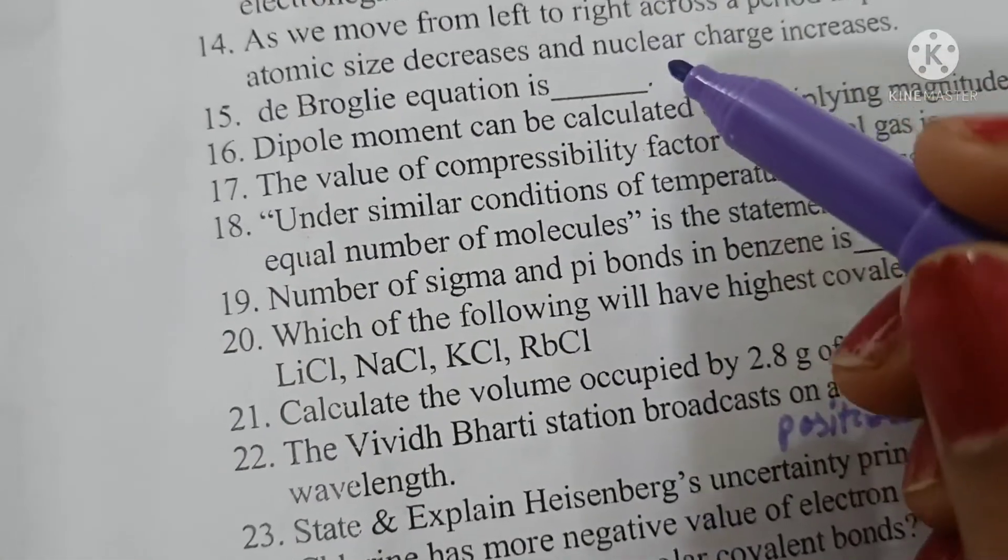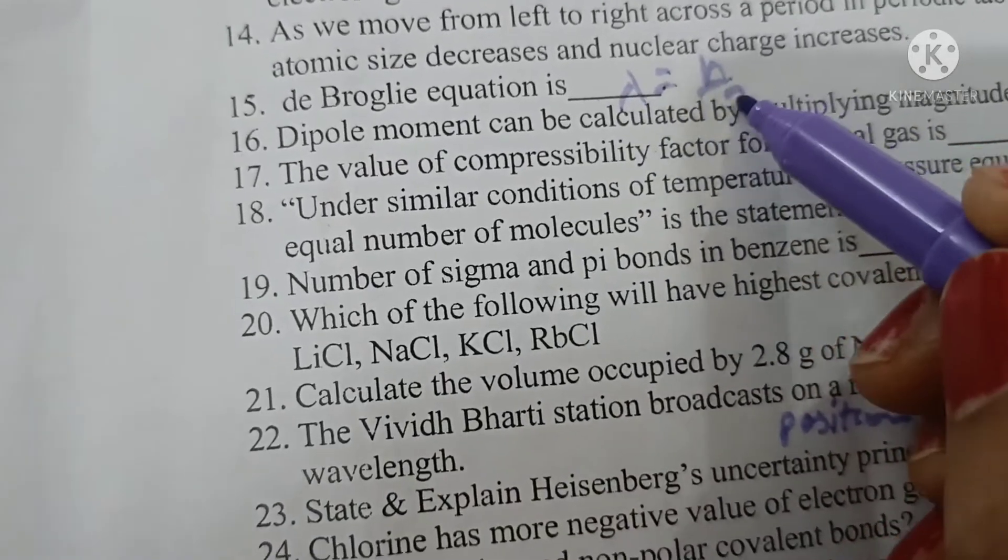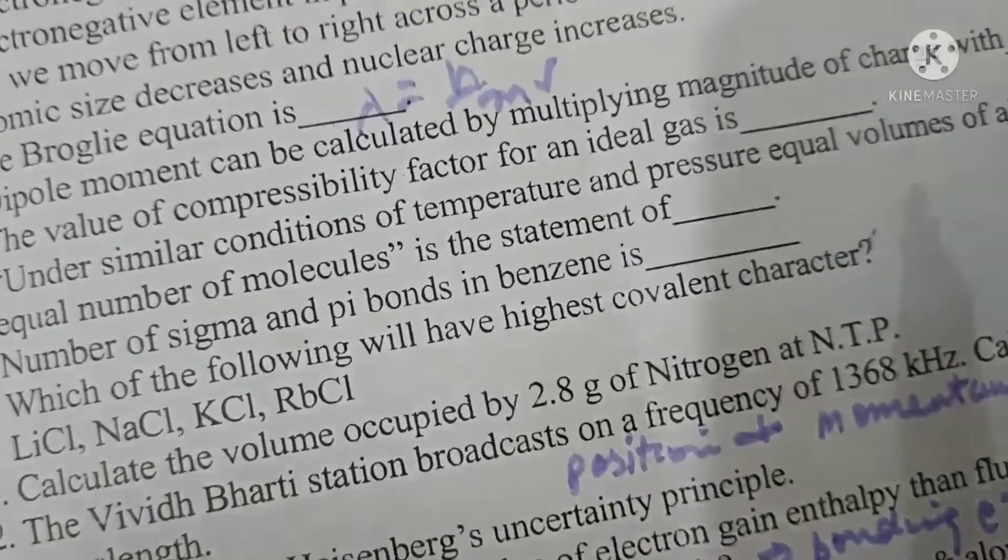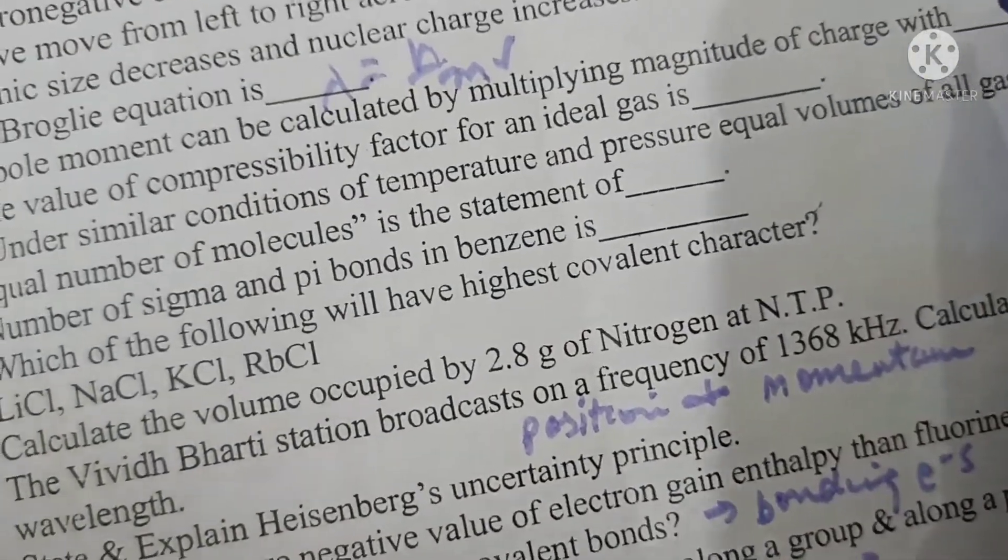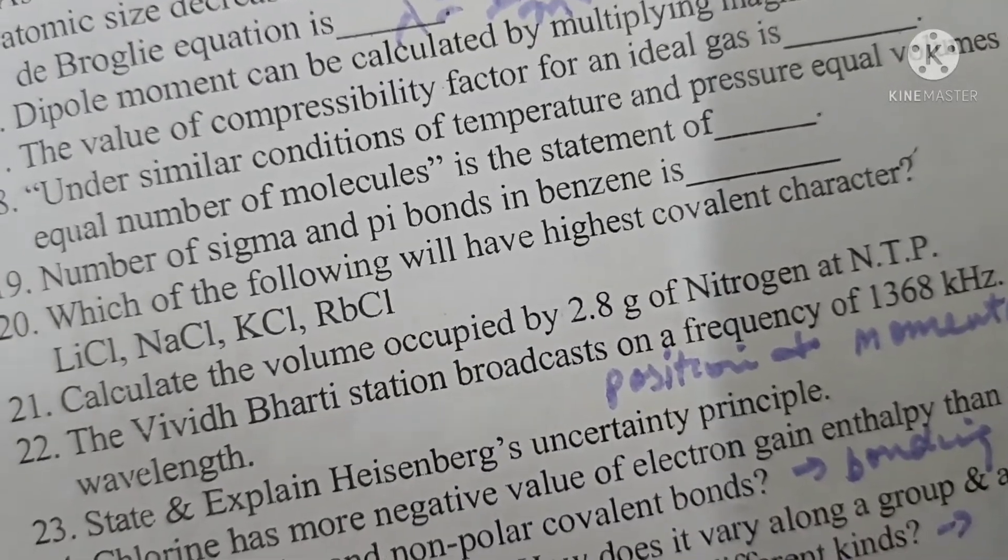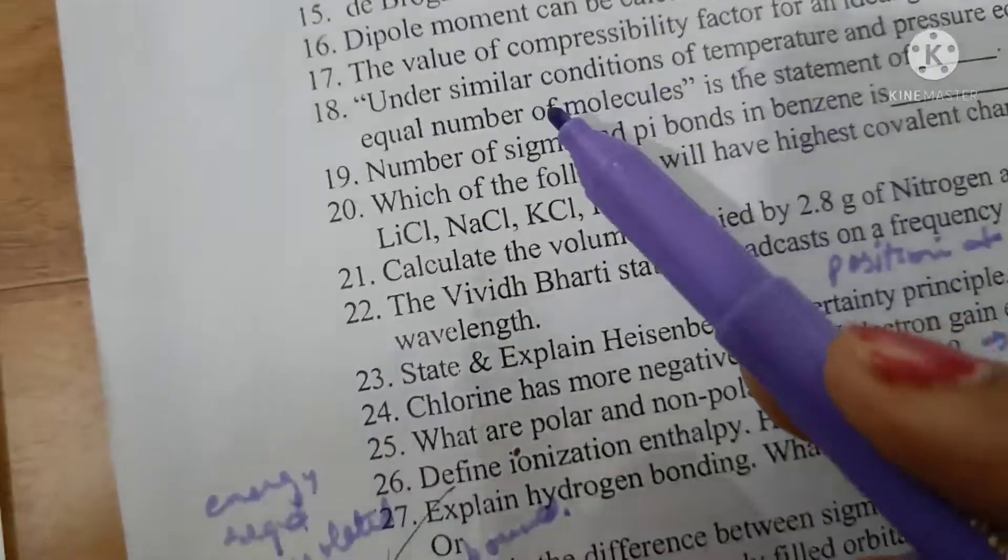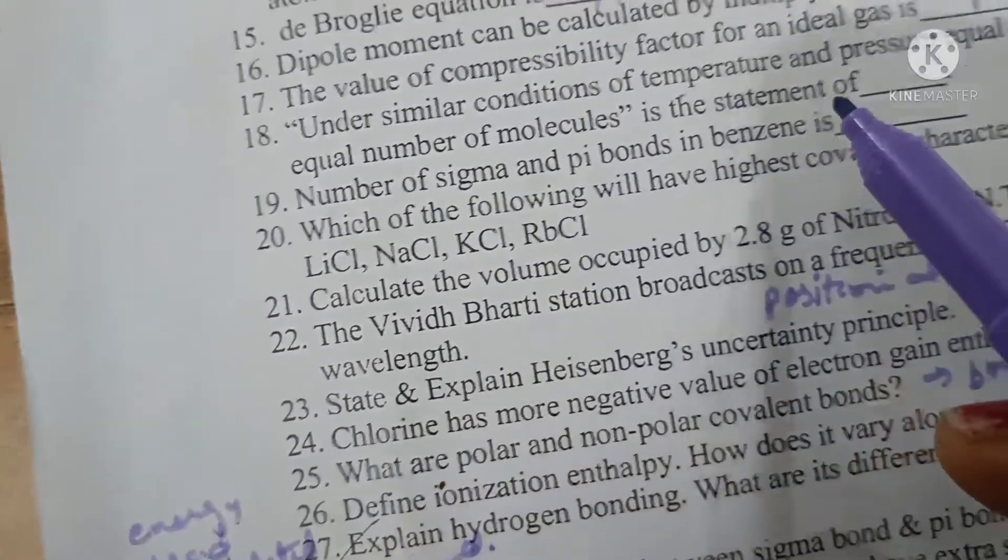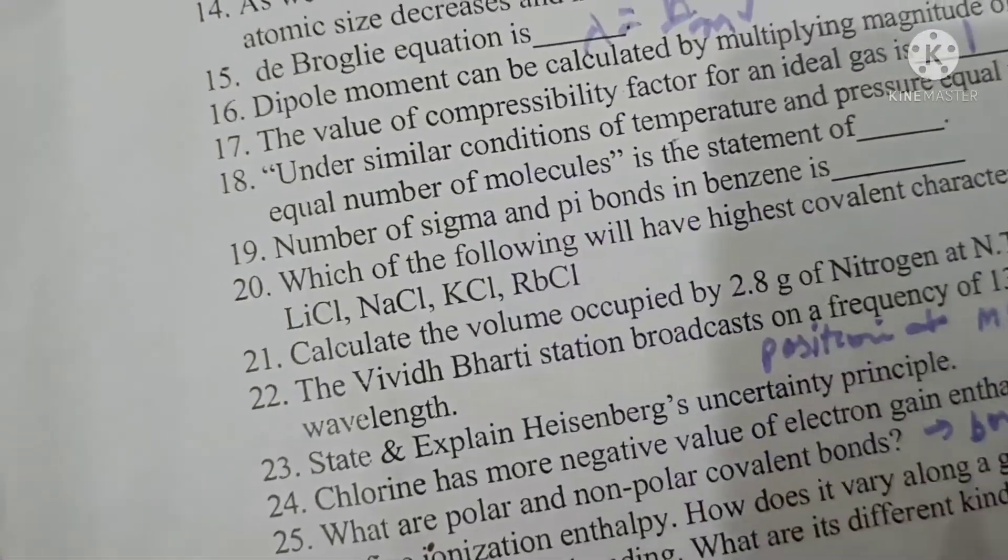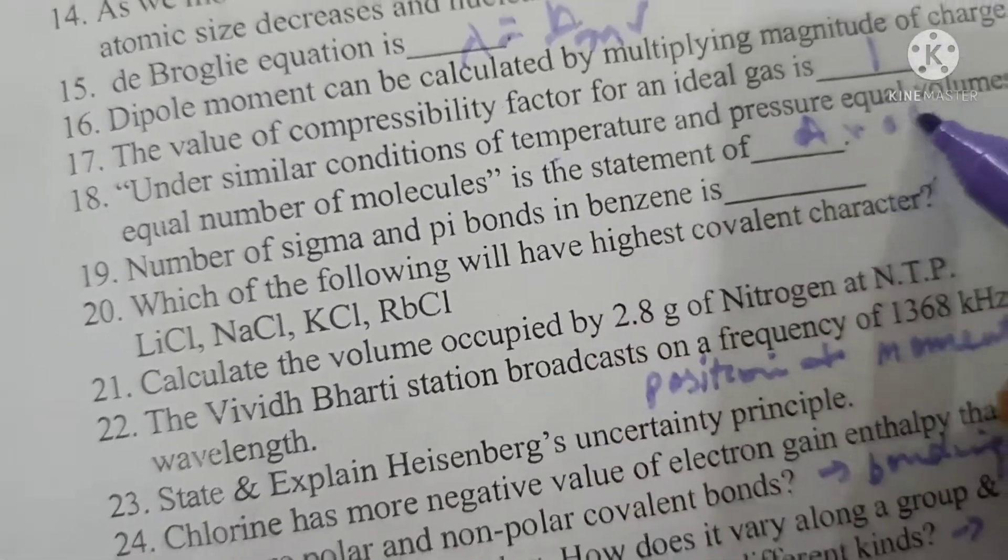De Broglie equation is lambda equals h by m v. Dipole moment can be calculated by multiplying the magnitude of charge with distance between partial charges. The value of compressibility factor for an ideal gas is 1. Under similar conditions of temperature and pressure, equal volumes of all gases have equal number of molecules is the statement of Avogadro's law.